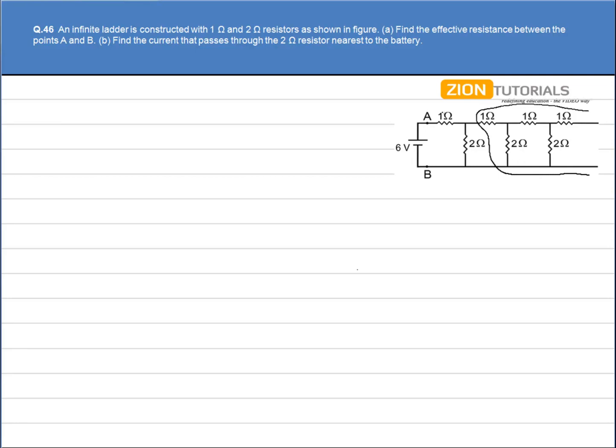So first if we neglect for an instance this 1 ohm and this 2 ohm resistor, the net resistance of the remaining circuit will be R equivalent that we assume. So if we assume this, the circuit reduces to this circuit.